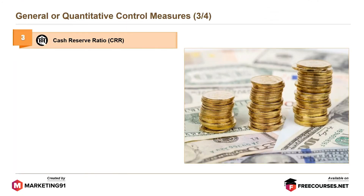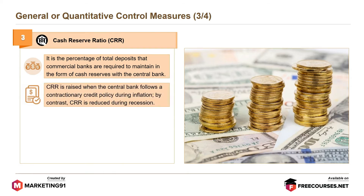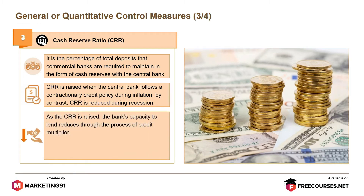Next is the cash reserve ratio or CRR. It is the percentage of total deposits that commercial banks are required to maintain in the form of cash reserves with the central bank. CRR is raised when the central bank follows a contractionary credit policy during inflation. By contrast, CRR is reduced during recession.